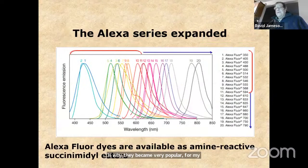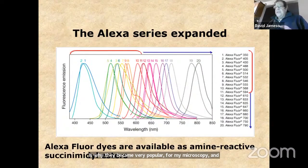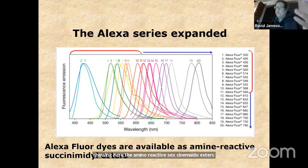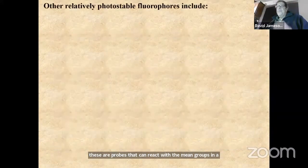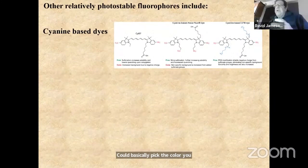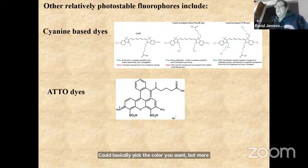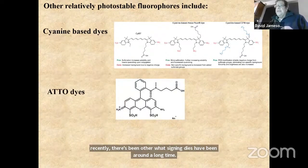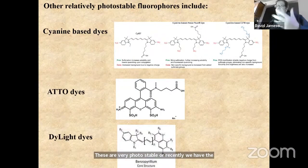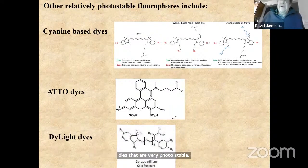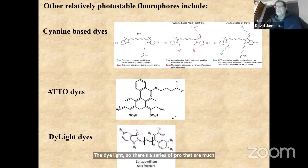There's a wide series of Alexa Fluor probes — shown here are the amine-reactive succinimide esters, which react with amine groups in a protein. You can basically pick the color you want. More recently, cyanine dyes, ATTO dyes, and DyLight dyes provide series of probes that are much more photostable than the original fluorescein probes.